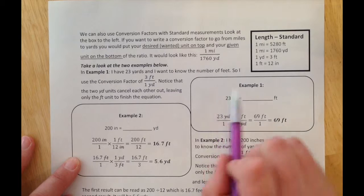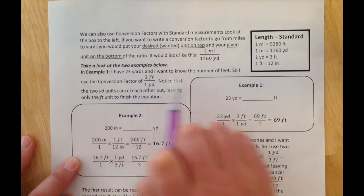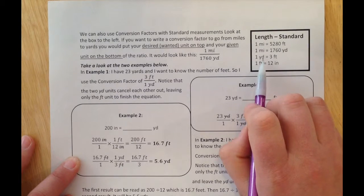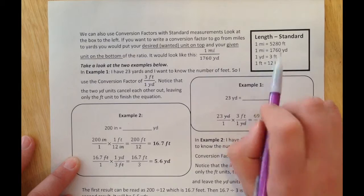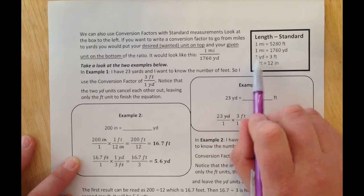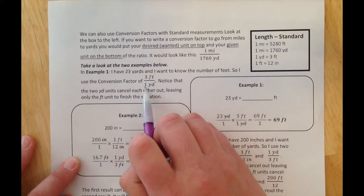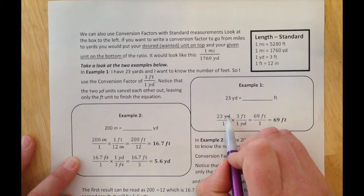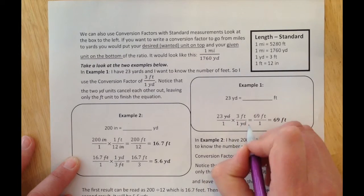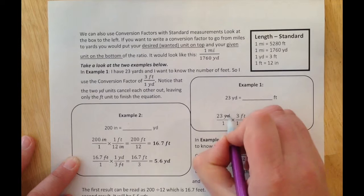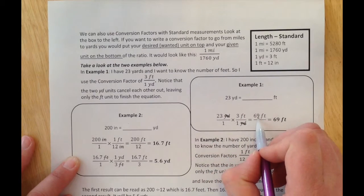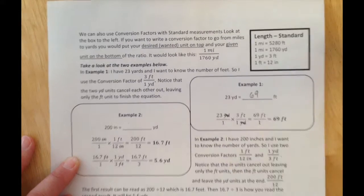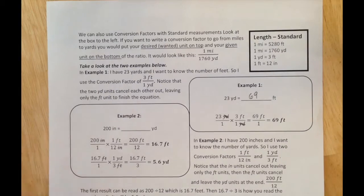If we take example number one, we have 23 yards and want to know the number of feet. So 23 yards, I want feet. There's 1 yard for 3 feet, but I need feet on top, so I put 3 feet over 1 yard so the yards will cancel. 23 yards over 1, 3 feet over 1 yard. My yards cancel. So 23 times 3 is 69 feet. 69 feet is my answer.